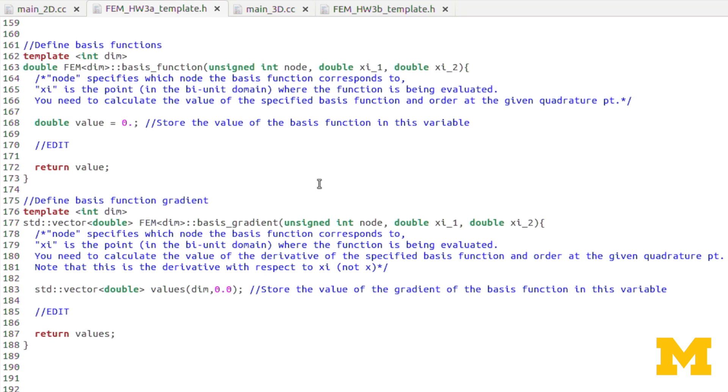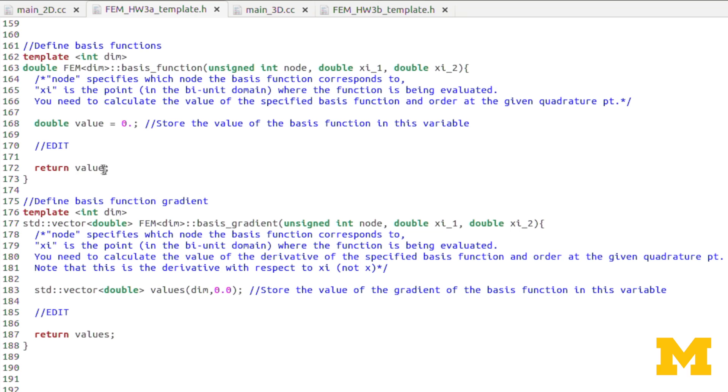Moving on to the basis function and the basis gradient. Again, we talked about the differences in input, where I have node xe1 and xe2 now. But you'll still do it in the same way. Probably in this case, it wouldn't make sense to do a generalized function, although you can certainly go ahead and do that. Since it's a lot simpler, since we're just doing linear basis functions, you can just do simple if statements. You know, if node equals such and such, evaluate the basis function using xe1 and xe2. And then again, you'll return value.